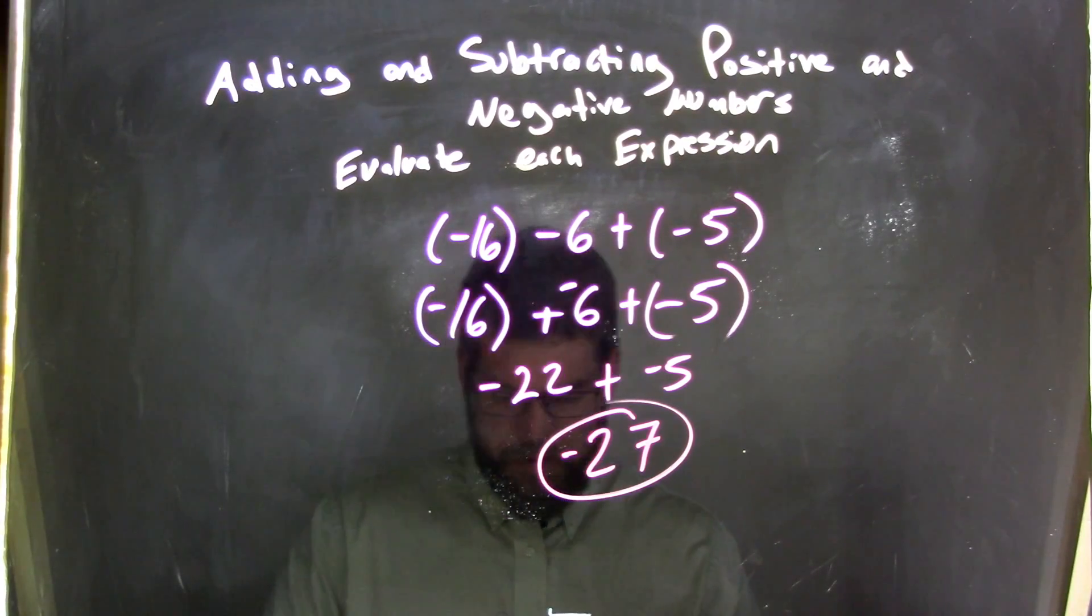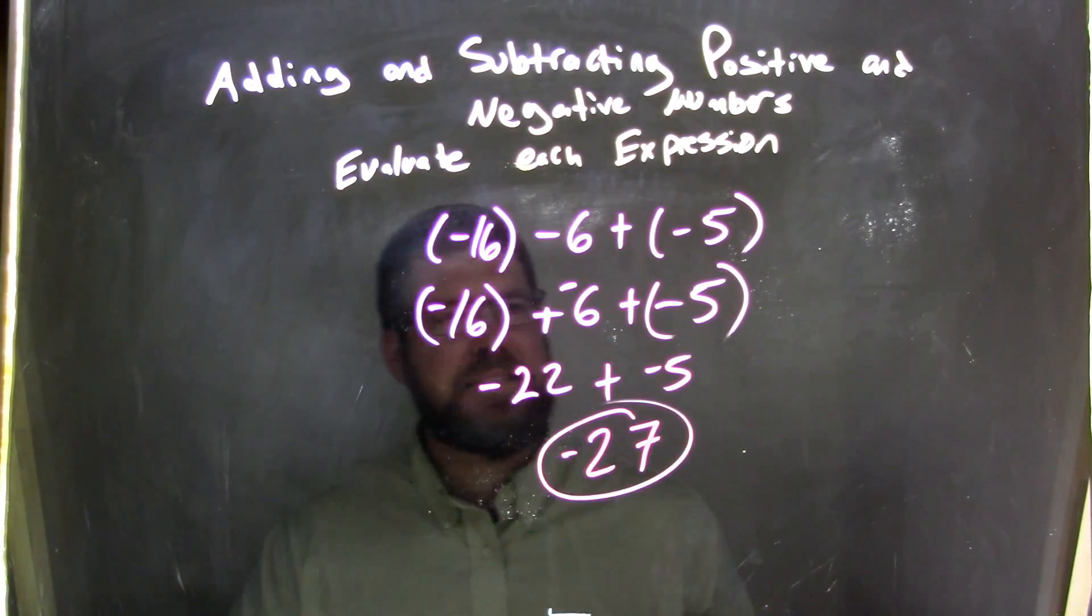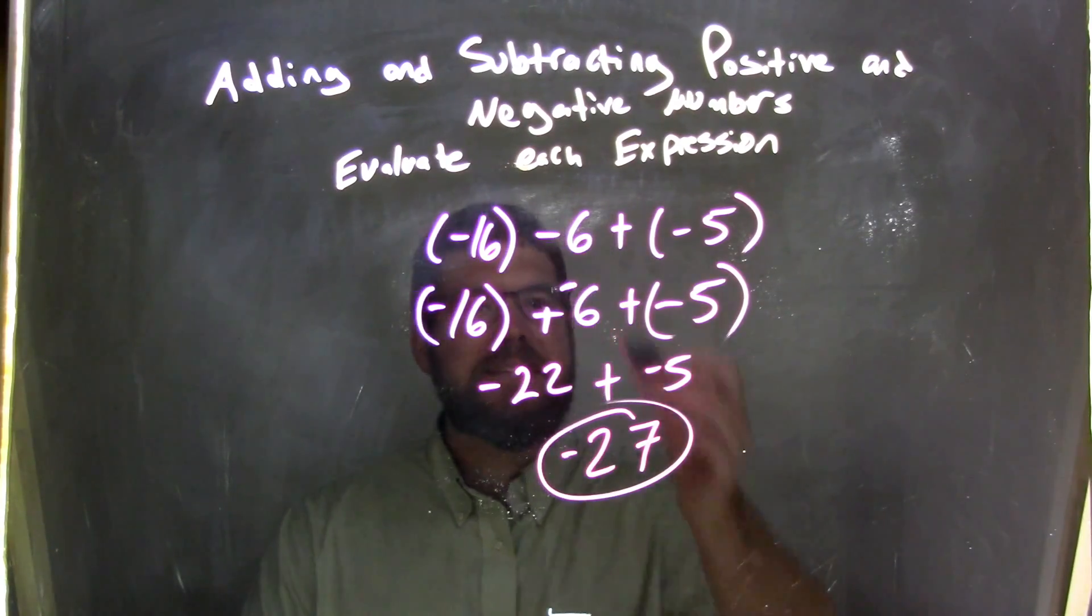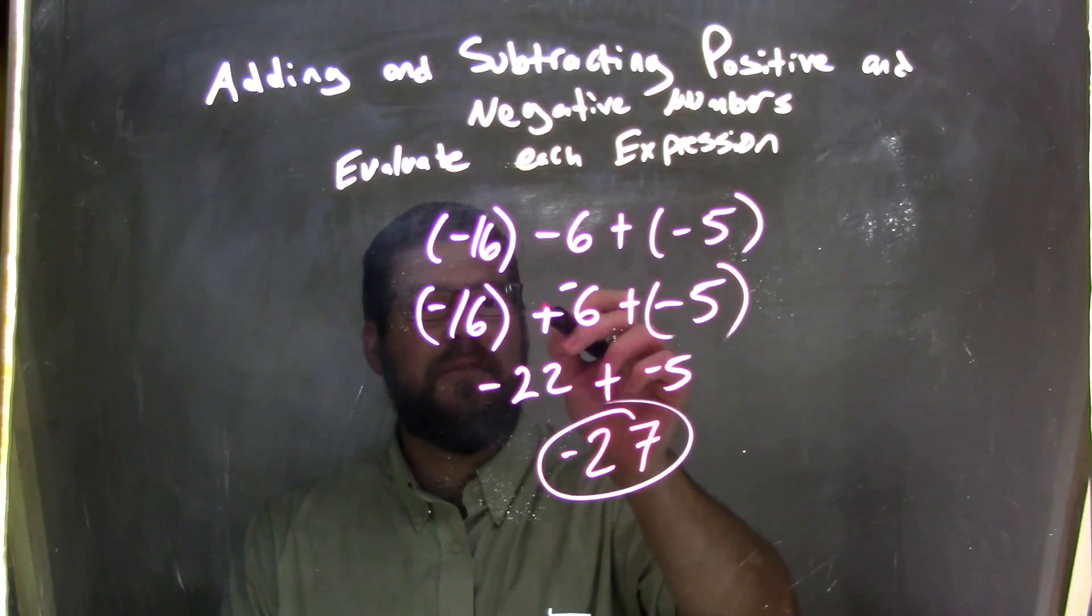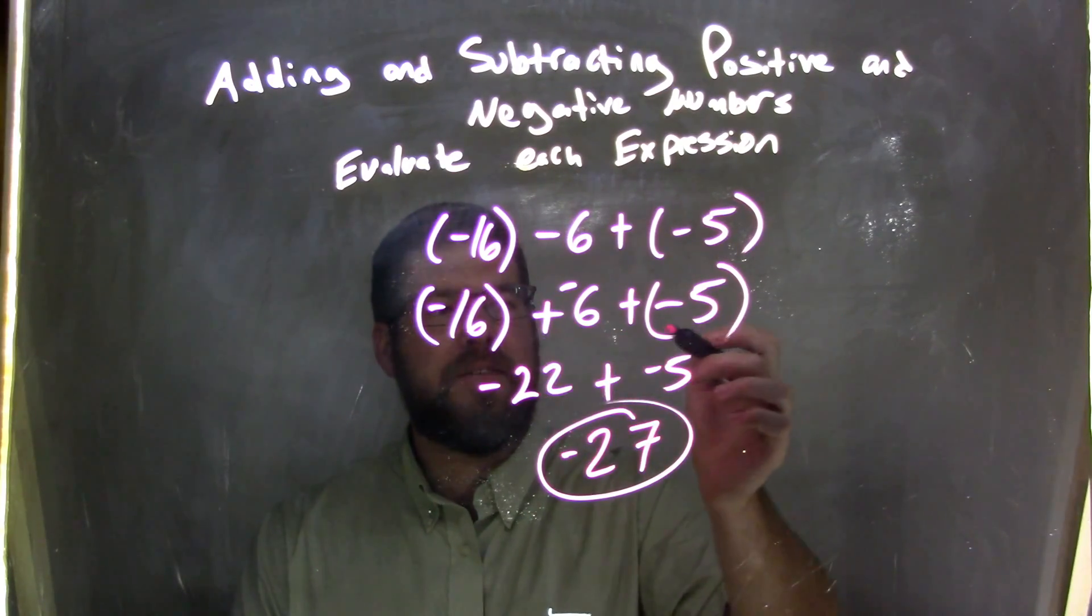And there's my final answer. So let's recap. We have negative 16 minus 6 plus negative 5. Minus 6 is the same thing as adding a negative. So now we have negative 16 plus negative 6 plus negative 5.